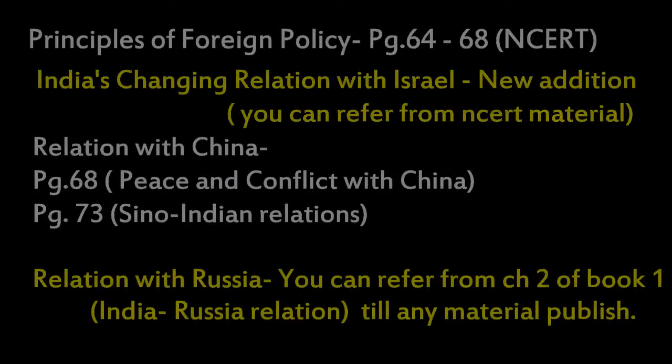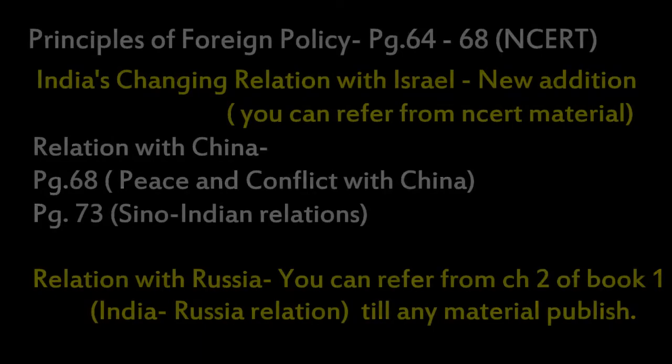India's External Relations is the Fourth Chapter. You have to study the principles of foreign policy and India's changing relations with other nations — like the US, Russia, China, and Israel — as well as India's Nuclear Program. You have to study the foreign policy and changing relations with other nations. In Chapter 2, there are many challenges to the Congress system — all the challenges of the Congress system including by-party system, multi-party system, and coalition system. This chapter is merged and you have to read it.